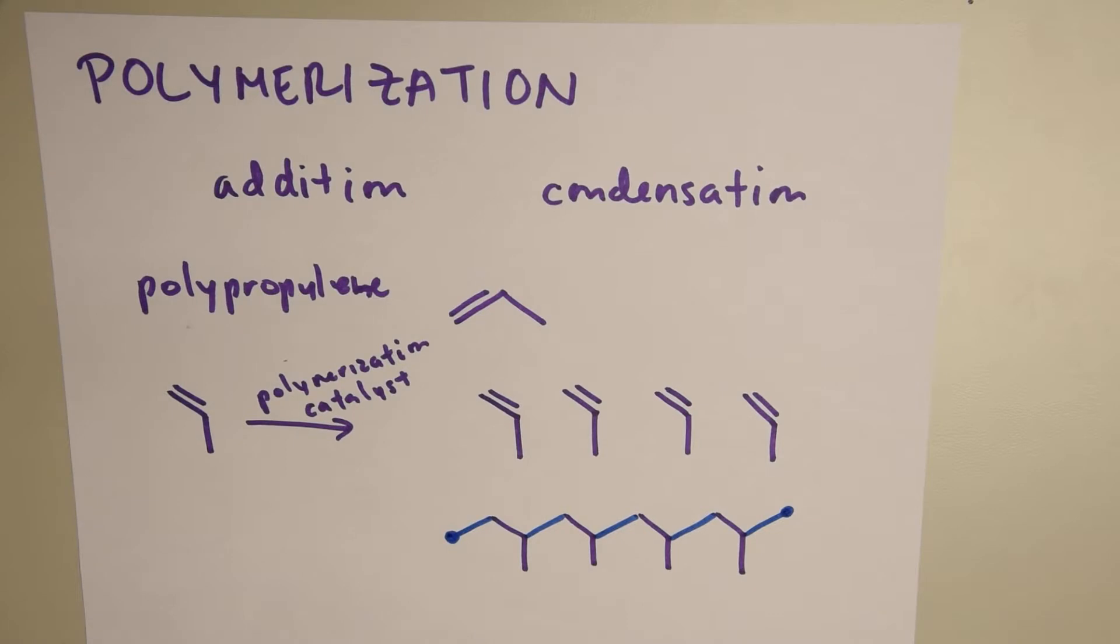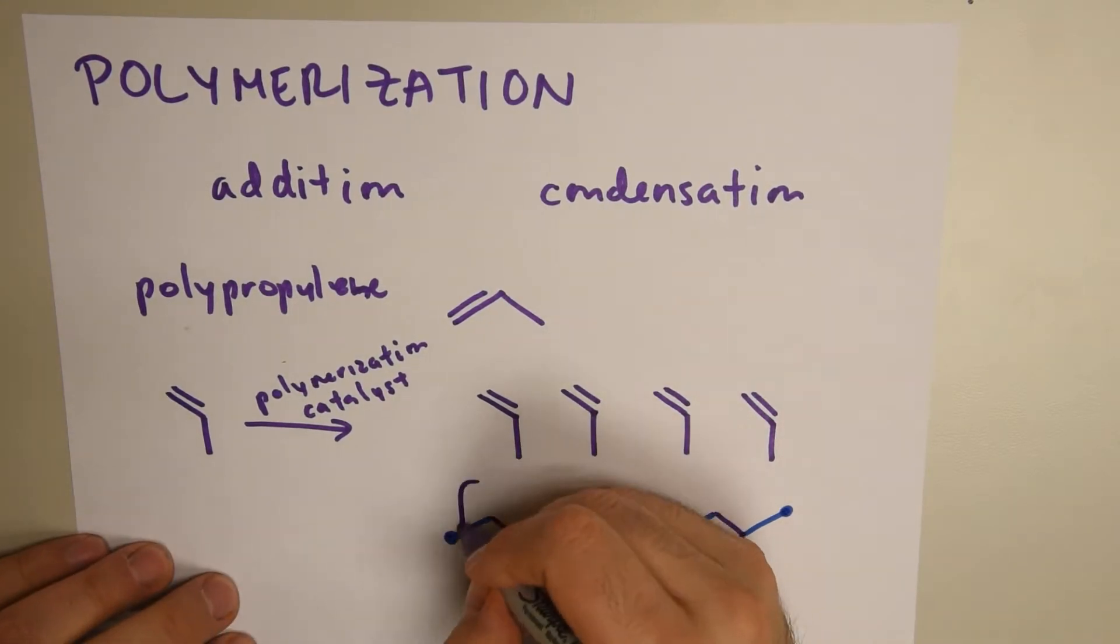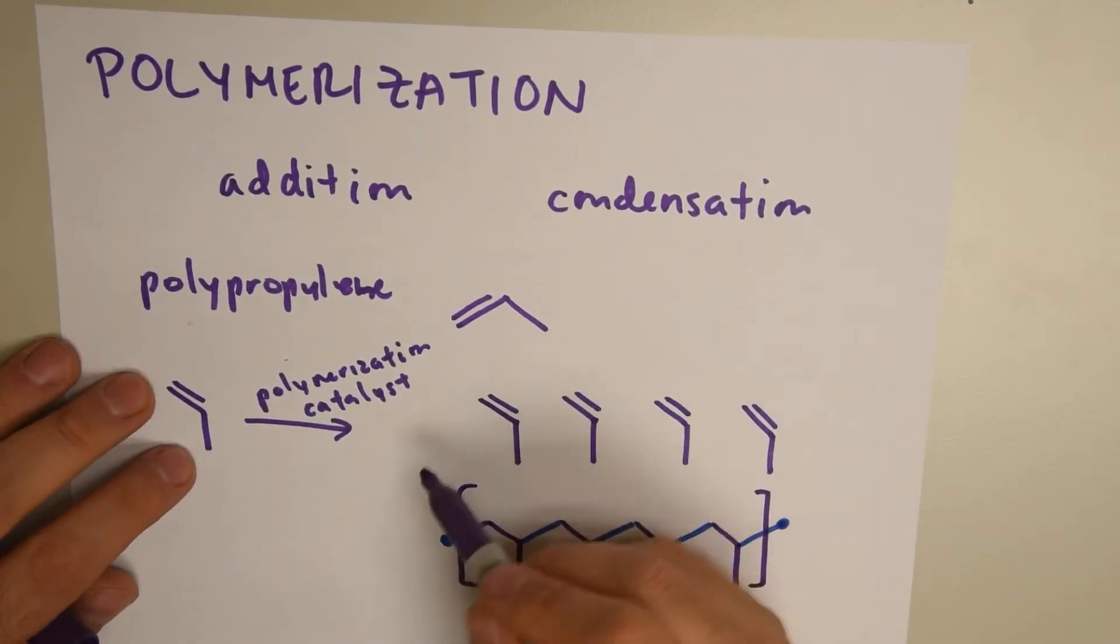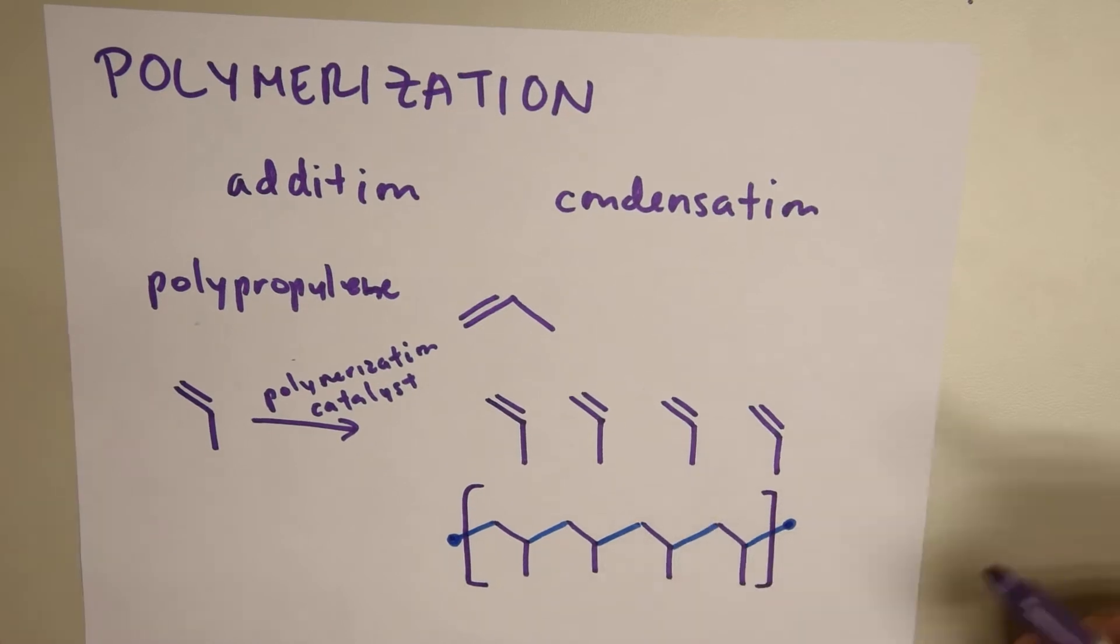This means that this is just a segment of the polymer. And in order to represent this, we write brackets, or parentheses, or a squiggly line, to show that this is only a section of all these little molecules coming together to form long strands, a long chain.